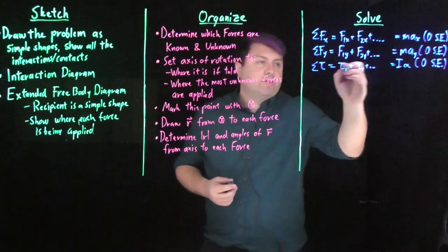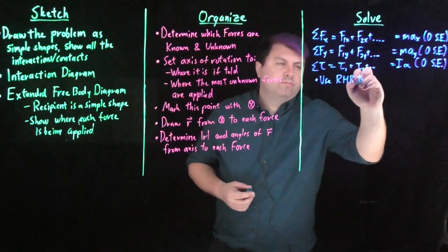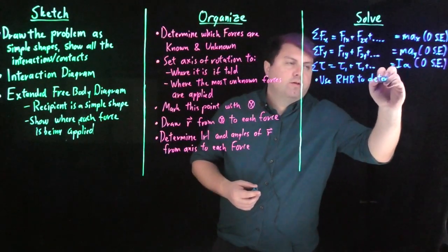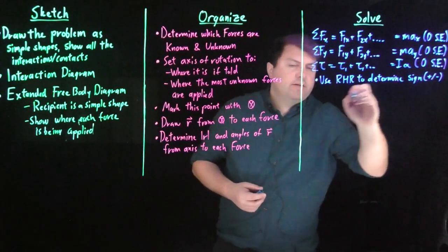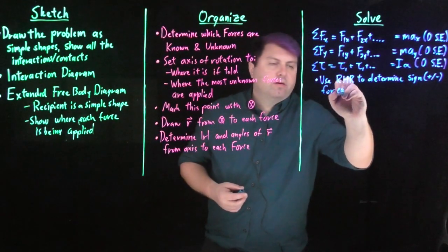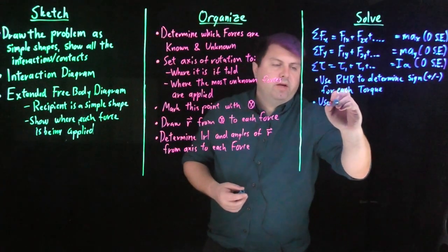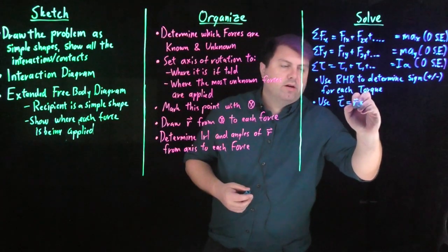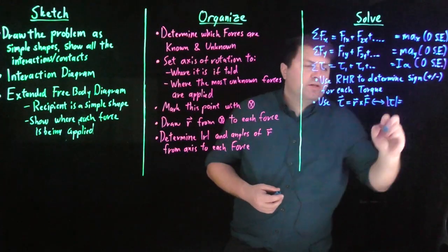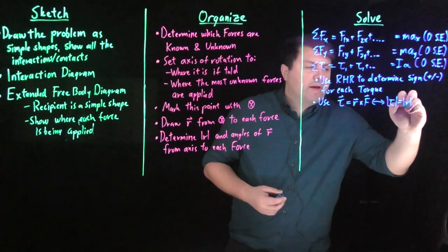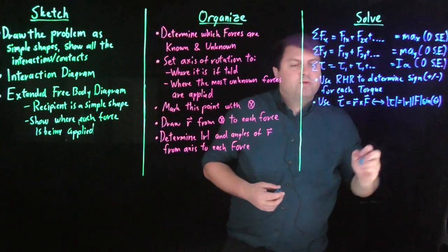How do we find out what's going on with these torques? We want to use our right-hand rule to determine sine. By sine, we mean plus or minus for each torque. And then we can use either the vector relations for torque, that it's R cross F, or very often just the magnitude relation that the torque is equal to the magnitude of R, the magnitude of F, sine of the angle between them.